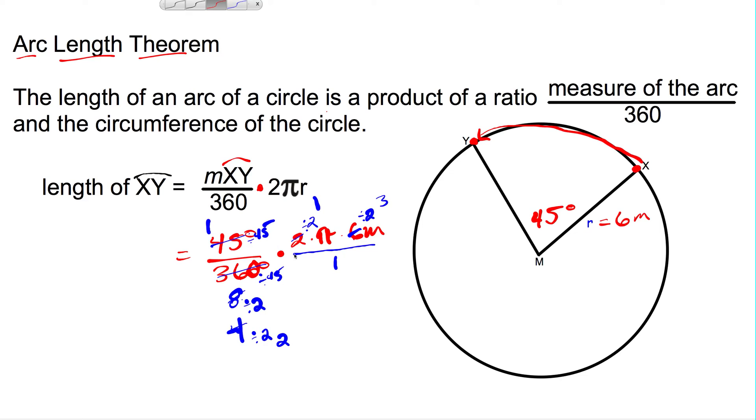In the numerator, we have 1 times 1 times pi times 3. Well, 1 times 1 times 3 is 3 in the numerator. In the denominator, we have pi there, so it'd be 3 pi. In the denominator, we have 2 times 1 left, so that'd be 2. We could, in terms of pi, say that the measure of arc XY is equal to 3 pi over 2. You may also see this answer expressed as 3 halves pi.